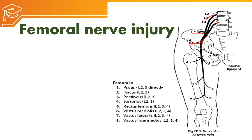After that, it continues anterior to the hip joint where it supplies the sartorius and pectineus muscle. Further, it passes medial to the femur bone and supplies the rectus femoris at the mid-shaft area, then vastus medialis, vastus lateralis, and vastus intermedius.